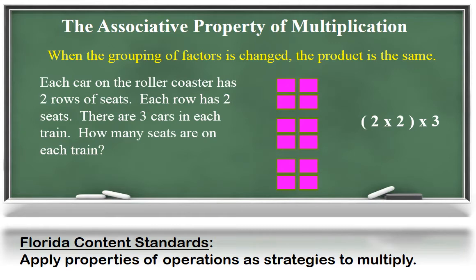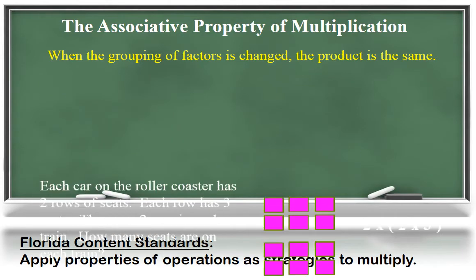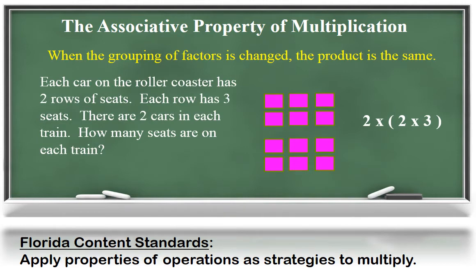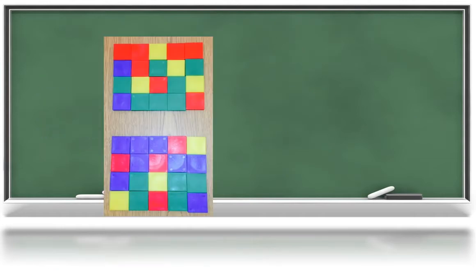The associative property of multiplication states that when the grouping of the factors is changed, the product is the same. Here's a problem that could model the associative property of multiplication: each car on the roller coaster has two rows of seats, each row has two seats, there are three cars in each train. How many seats are on each train? You can see that the model and the expression go along with that story problem. But if I change the order of the factors by using this story problem, you can see that my model and my expression appear different, yet they still give me the same result.